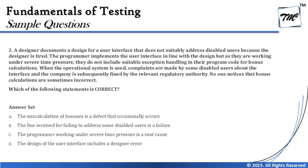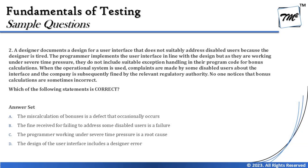Option A says 'the miscalculation of bonuses is a defect that occasionally occurs.' That's a good statement, but the miscalculation of bonuses is actually a failure by the system, not a defect. Remembering the three keywords — error, defect, and failure — failure is what you observe when executing the test and it fails. The root cause behind it is the defect, and that defect is due to an error. So failure results in detection of a defect, and the defect is due to an error. Miscalculation of bonuses is more of a failure because you identify it while executing the system.